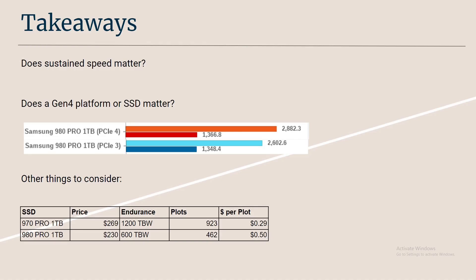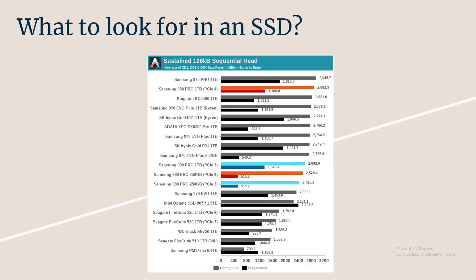The 970 Pro is definitely more expensive than the 980 Pro, however its endurance is twice as much. Based on each plot using 1.3 TBW, you're spending only 29 cents per plot on the 970 Pro versus 50 cents per plot on the 980 Pro. These prices are from Amazon as of the time of recording.